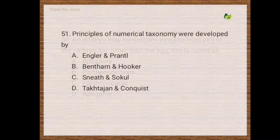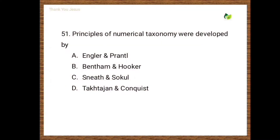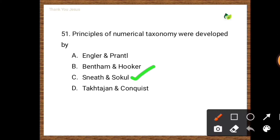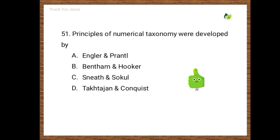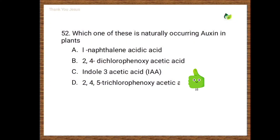Next question: Principles of numerical taxonomy were developed by — options are Engler and Prantl, Bentham and Hooker, Sneath and Sokal, Takhtajan and Cronquist. The correct option is the third one, that is Sneath and Sokal.